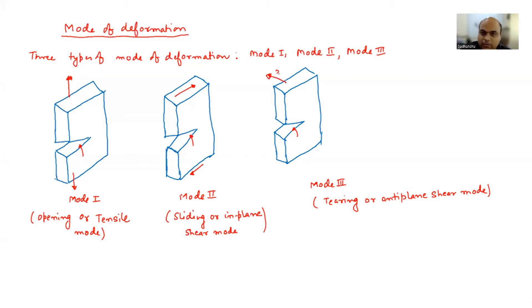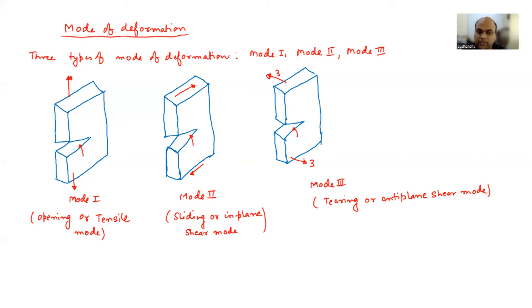Mode three: you're applying load in opposite directions and tearing it. Suppose you have a paper, you make a crack in it and then tear it — that becomes mode three. In general, you have three different modes: opening/tensile mode (mode one), sliding/in-plane shear mode (mode two), and tearing/anti-plane shear mode (mode three). Depending on conditions, you can have either of these three or a combination. In our lecture, we are going to mostly use mode one.